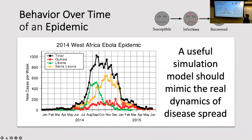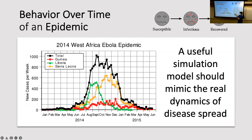If you look at Ebola back in 2014 across three different areas, if you look at the number of new cases per week you see a similar shape across all three areas. If we build a useful simulation model of a disease outbreak like Ebola, we should hopefully see similar shapes in our model, which allow us to better understand where those shapes come from. Then if we match those shapes, we can intervene in our simulation model to get a better idea how to intervene in the real world.